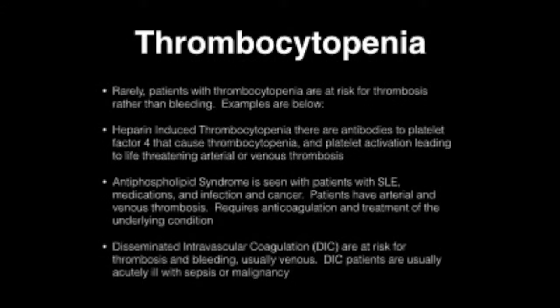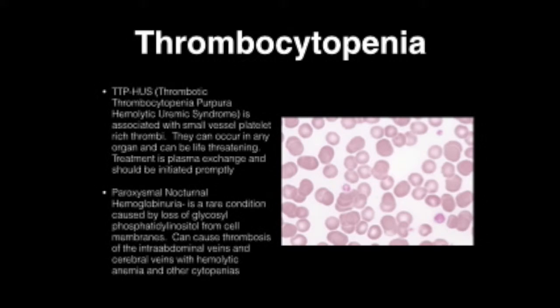Disseminated intravascular coagulation, or DIC, places patients at risk for both thrombosis and bleeding, usually venous. DIC patients are usually acutely ill with sepsis and malignancy. We tend to treat the thrombosis rather than the bleeding in most situations.